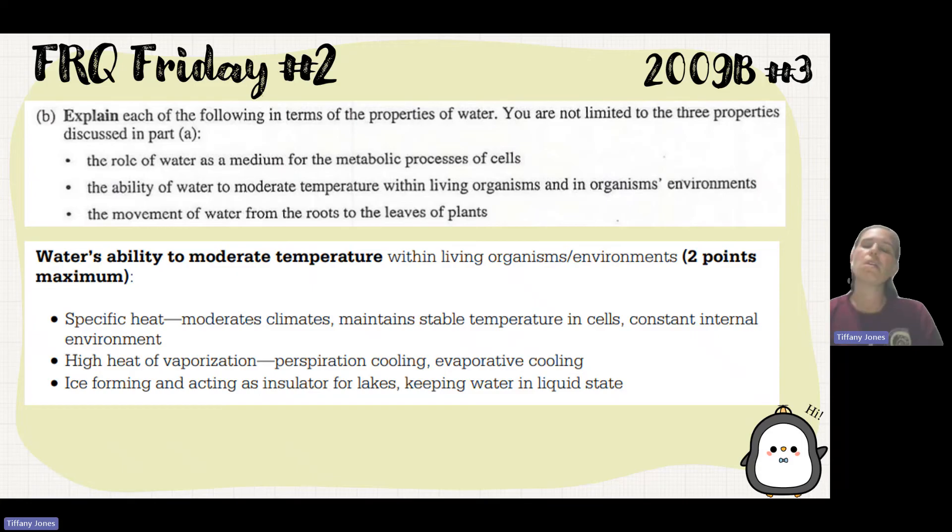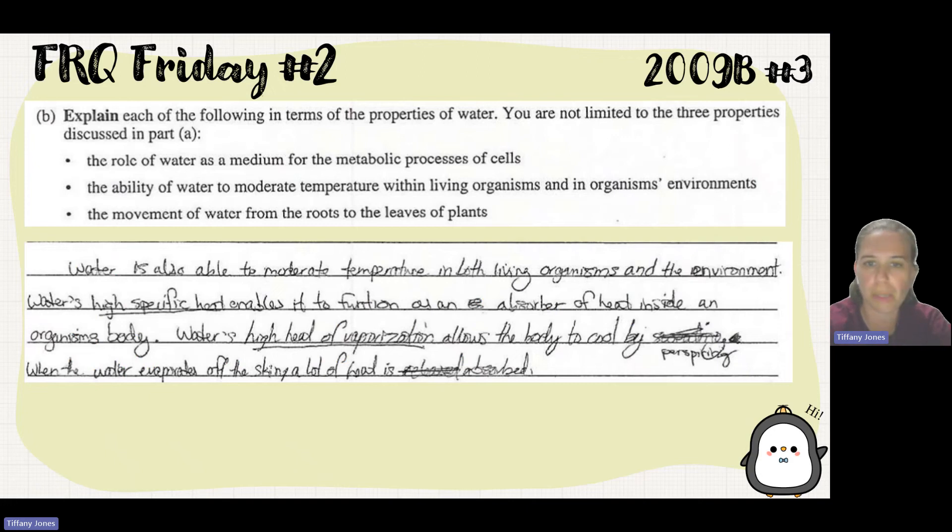Talking about water's ability to moderate temperature brings us back to specific heat. It can moderate climate and produce stable temperatures in cells, maintaining a constant internal environment. Looking at evaporative cooling, because of high heat of vaporization, when you sweat the heat from your skin breaks hydrogen bonds between water molecules, causing liquid water to become water vapor, bringing the heat away with it.